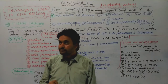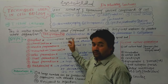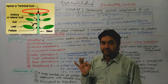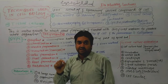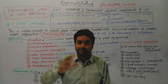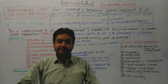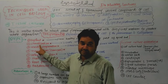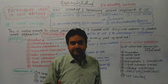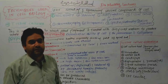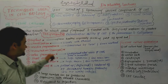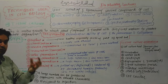The apical region is preferred because it undergoes rapid division. The next step is sterilization. Sterilization removes disease-causing organisms from the explant. Chemicals such as ethanol are applied to sterilize the explant, making it clean and free of contaminants before placing it on the medium.